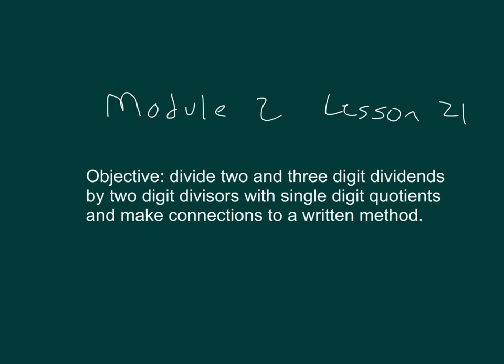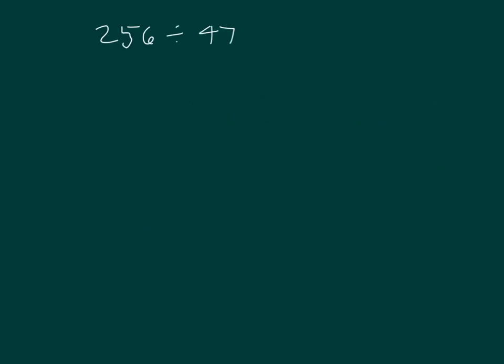The objective within this lesson is to divide two- and three-digit dividends by two-digit divisors with single-digit quotients. Here we have 256 divided by 47. How can we estimate the quotient?